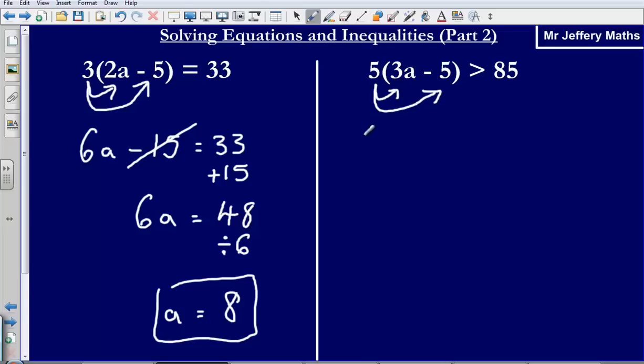5 multiplied by 3a gives me 15a. 5 multiplied by negative 5 gives me negative 25. And that is greater than 85.